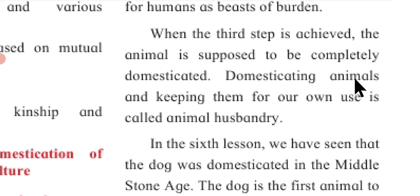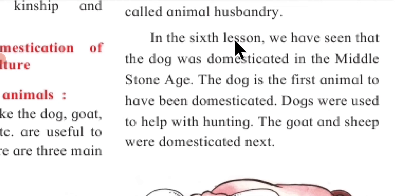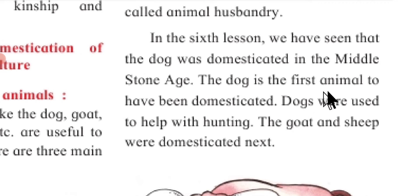Domesticating animals and keeping them for our own use is called animal husbandry. In the sixth lesson, we have seen that the dog was domesticated in the middle stone age. The dog is the first animal to have been domesticated. Dogs were used to help with hunting.